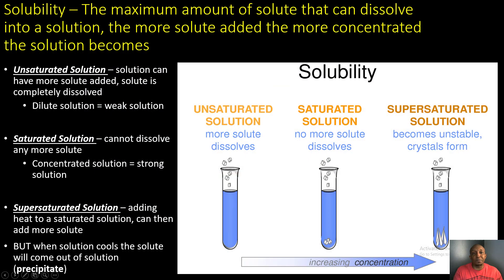Now let's take a look at solubility, which is the maximum amount of solute that can dissolve into a solution. The more solute added, the more concentrated the solution becomes. We have three different types of solutions: unsaturated, saturated, and supersaturated solutions.